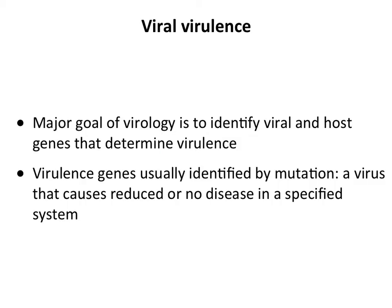In virology, we want to know all about virulence — what viral genes and cellular genes regulate it. If you can understand what makes a virus virulent, maybe you could figure out how to stop it. The way we identify these genes is by mutation: we make mutations in virus and look for mutations in genes that make the virus less virulent, then we try to figure out what they're doing.